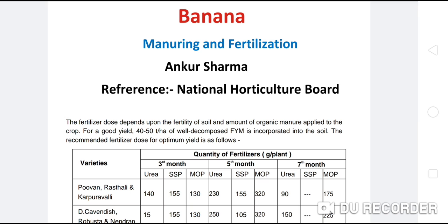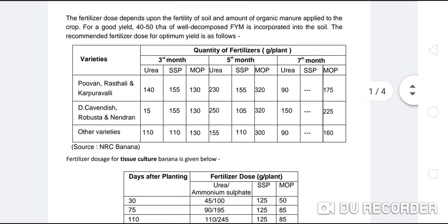For a good yield of 40–50 tonnes per hectare, well-decomposed FYM is incorporated into the soil so that nitrogen, phosphorus, and potassium levels remain adequate. The recommended fertilizer dose for optimum yield is given by the National Horticulture Board, NRCs of different fruits, National Research Centre Banana, different agriculture universities, and research centres. We will discuss the recommendations from NRC Banana and the National Horticulture Board.